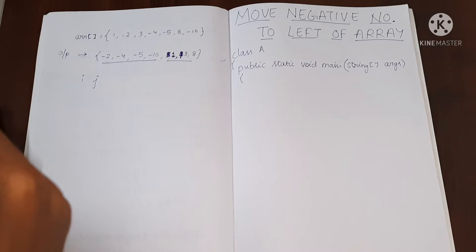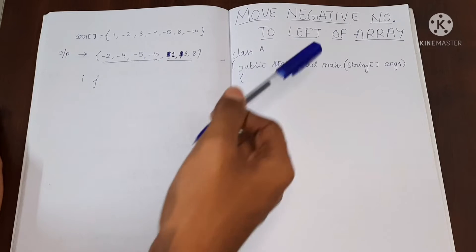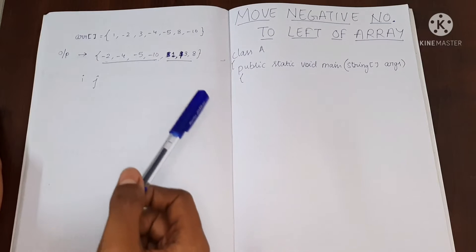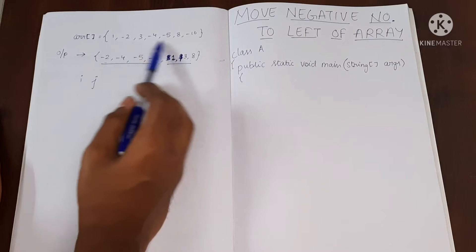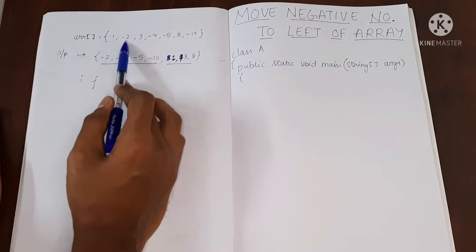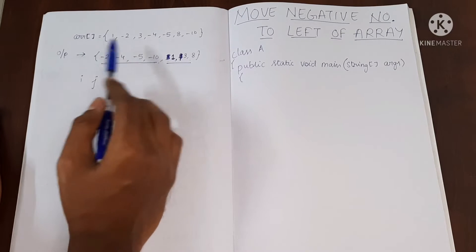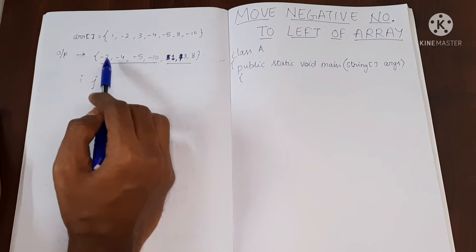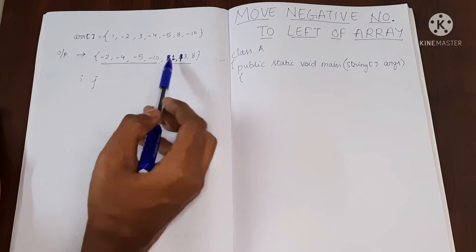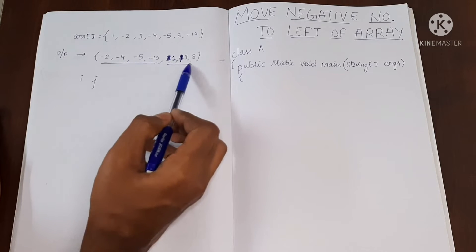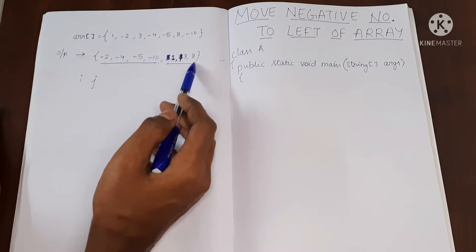Hello, in today's video I'll show you how to move all the negative numbers in an array to the left of the array, that is to the beginning part of the array. So let's say this is our input. We have an array with some values which are both positive and negative numbers. So our required output is all the negative values should be at the beginning of the array.